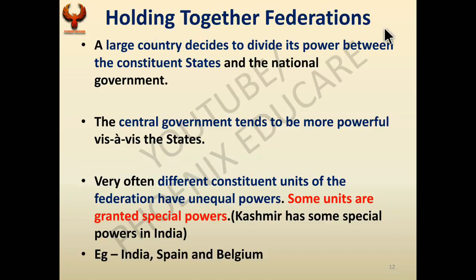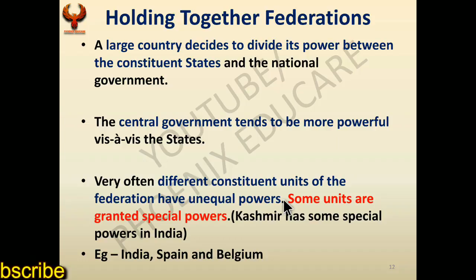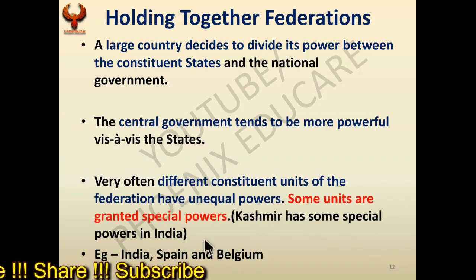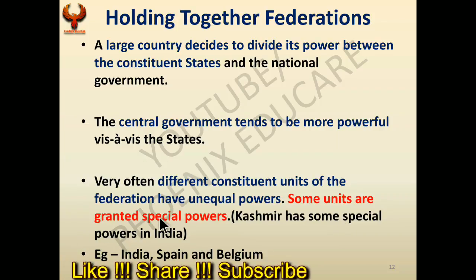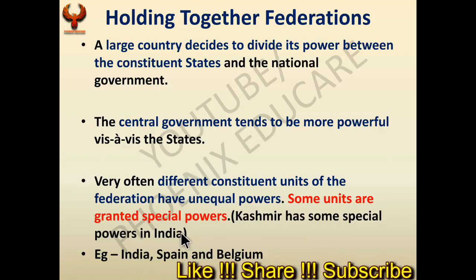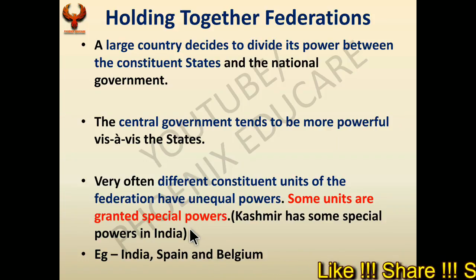The second is the 'holding together' federation, where a large country decides to divide its powers between the constituent states and the national government. In this type, the central government tends to be more powerful than the states. The different constituent units of the federation often have unequal power — for example, in India, Kashmir had special powers and some northeastern states also have special powers. Examples of holding together federations are India, Spain, and Belgium.